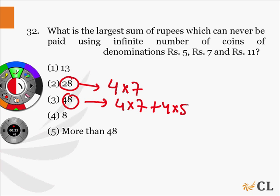We can easily see that we cannot make 8, we cannot make 13 using coins of denominations 5, 7, and 11. Let us confirm whether 13 is the largest number. Option 5 says more than 48.